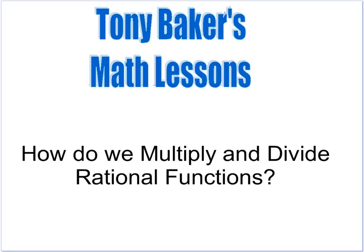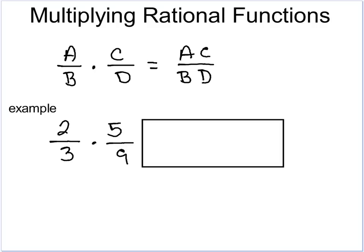In this video we're going to look at how to multiply and divide rational functions. First we're going to look at multiplication, and multiplication is exactly the same way we multiply regular fractions. So A over B times C over D is just the tops multiplied and the bottoms multiplied. Then you can reduce if necessary.